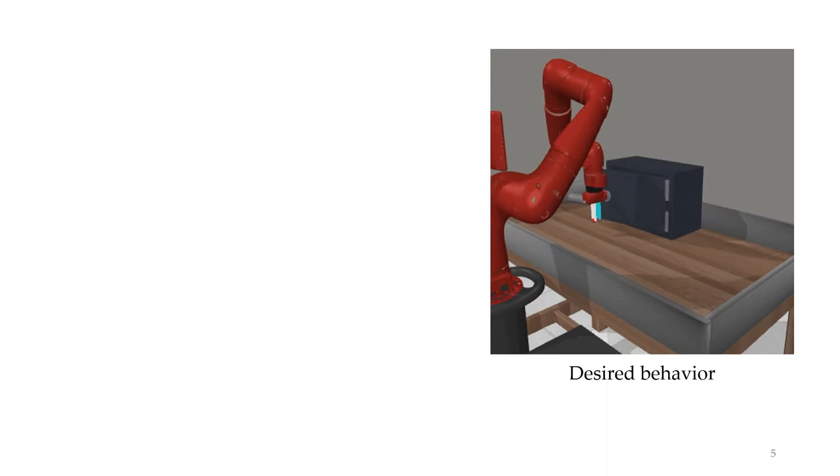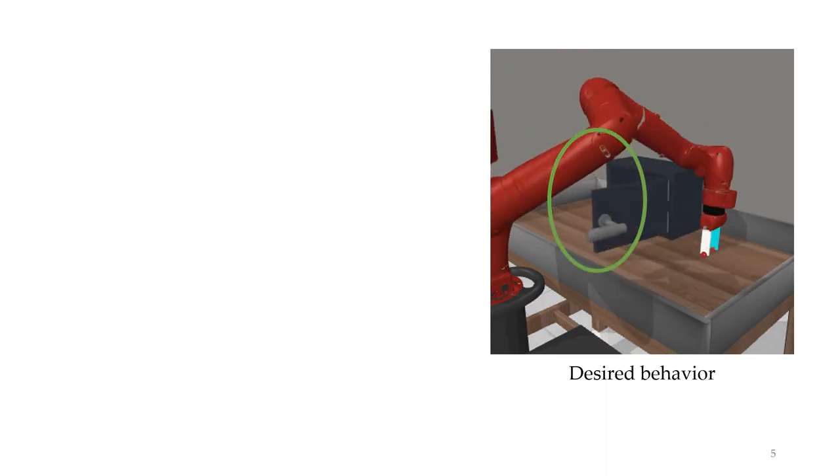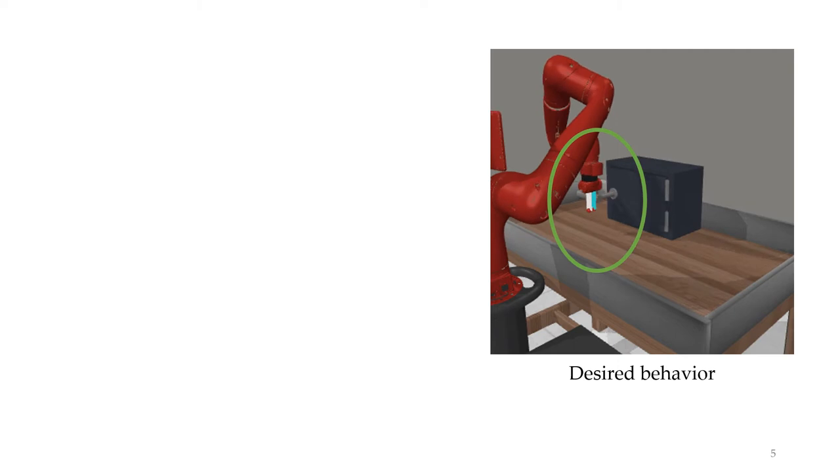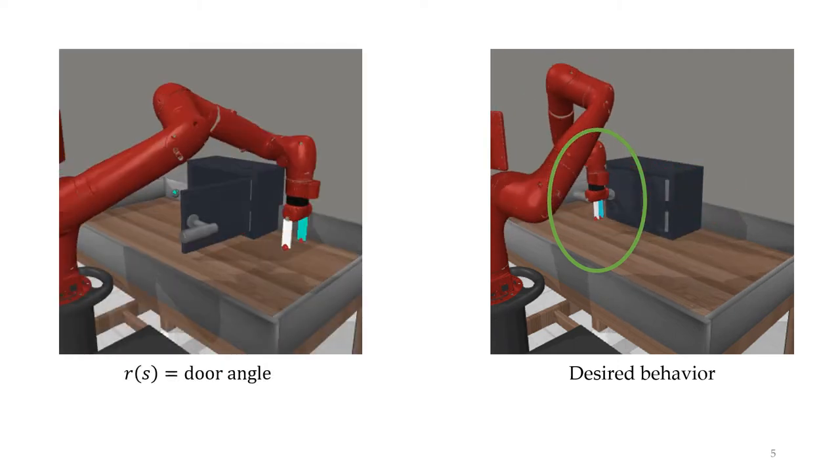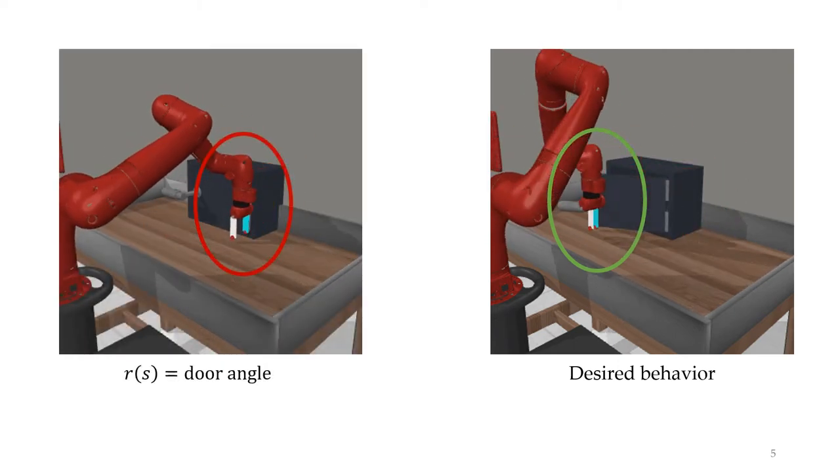For example, let's say that we want a robot to learn how to close a door like this. Notice how it uses the handle like a human would. If we define a reward function as just the angle of the door, the robot learns to slam the corner of the door instead of using the handle.